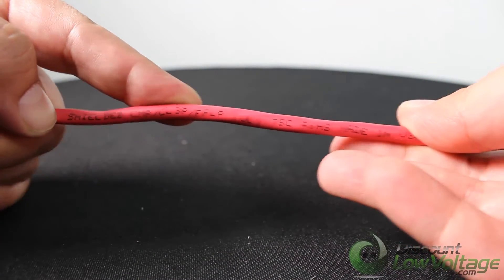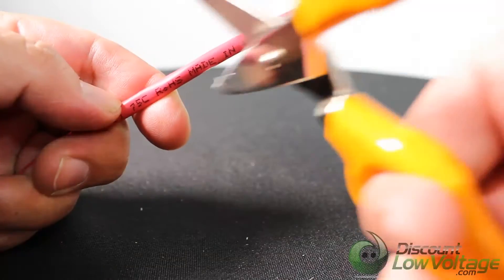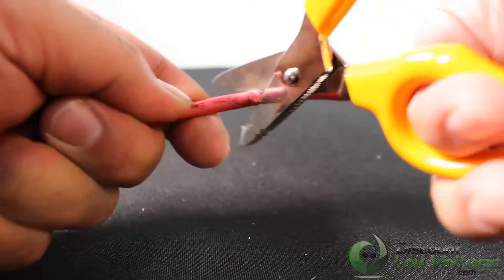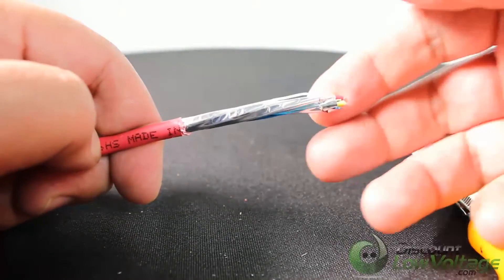All plenum listed fire alarm cables provide compliance to NAC article 760, NAC article 725, FPLP, and CL3P. These are rated for power limited 300 volts.